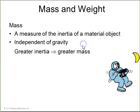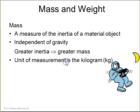Again, mass is the measure of inertia of an object. It's independent of gravity. Greater inertia means greater mass. So, here is an astronaut. He's got an anvil. He's way out in space. The anvil is weightless.